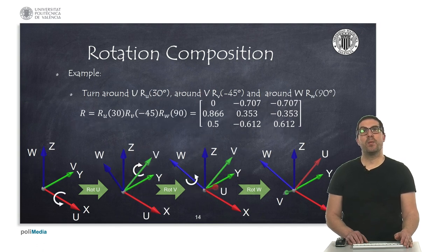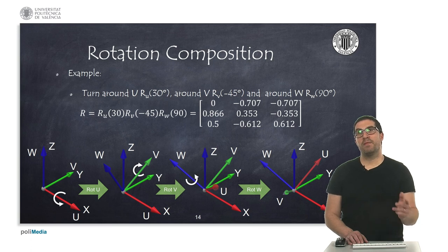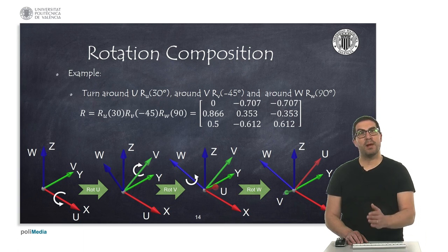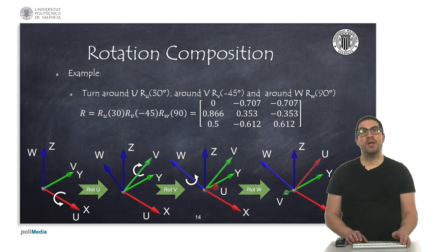Finally, here we show another example in which the sequence of operations is performed with respect to the mobile reference system. At the beginning, both the fixed and the mobile frames are coincident, and applying a rotation around u is actually the same as applying a rotation around x. However, once rotated, the next rotation is applied around v, and then around w. As a consequence, we must post-multiply the basic rotation matrices. In this presentation, we have seen rotation matrices for representing orientation in 3D space. Make sure you properly understand all concepts before continuing to the next videos. Thank you very much.